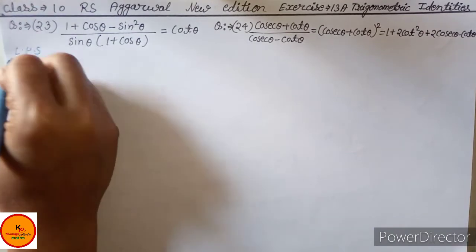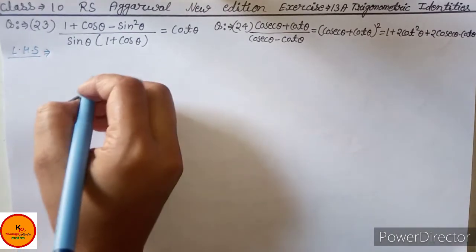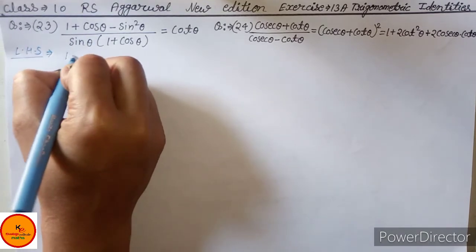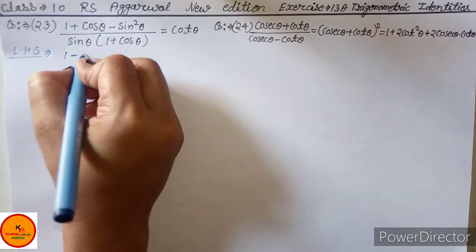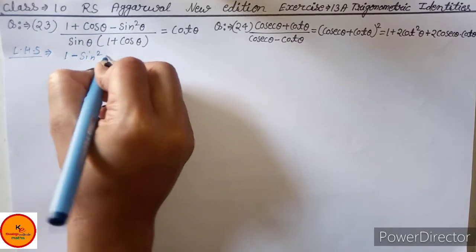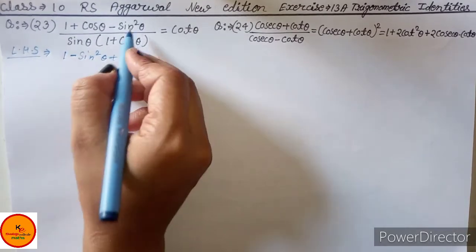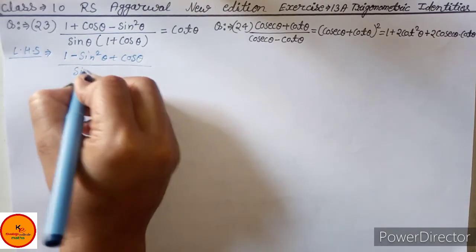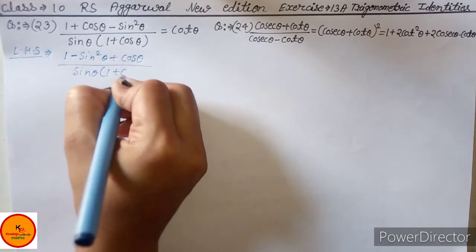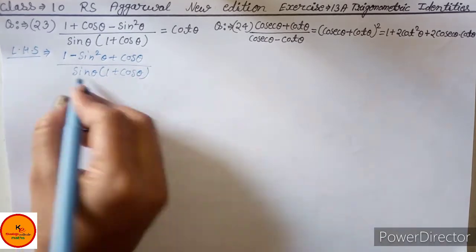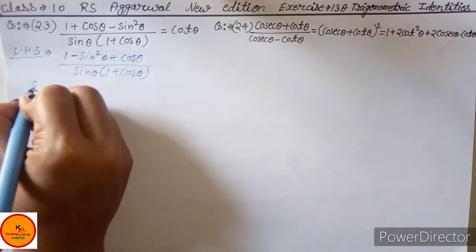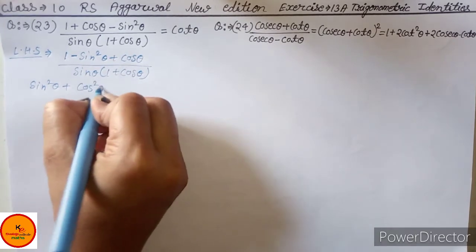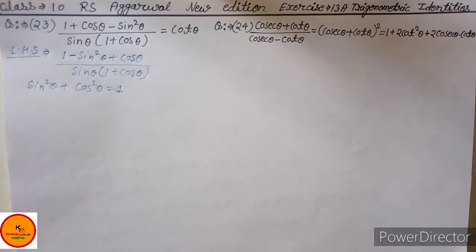In the LHS part, you have 1 plus cos theta. We can write 1 as 1 minus sin square theta, plus cos theta. We put this in the denominator with sin theta and 1 plus cos theta. Using the identity sin square theta plus cos square theta equals 1, we can write 1 minus sin square theta as cos square theta.